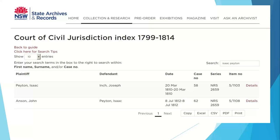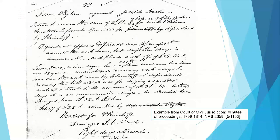Here we have Isaac Payton suing Joseph Inch in 1810. Going to the actual record for that case, we learn it's about some work that Inch did for Payton, for which he wanted to charge £36. Payton has only paid £25 to £26 because he doesn't think the work was worth that much. To support him, he's called in Lewis Jones, a master stonemason for 18 years, who says the work was not worth £36 and should only have been £25. So there you've got information on three people: Isaac Payton, Joseph Inch and Lewis Jones.